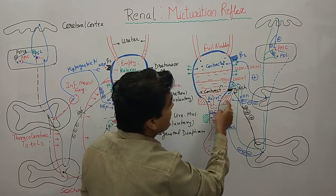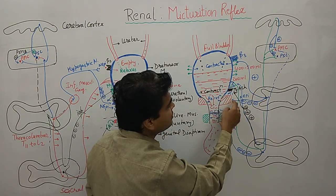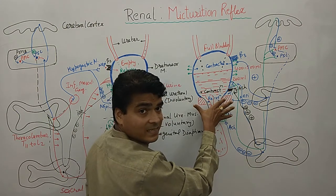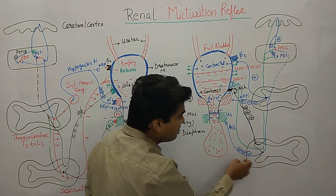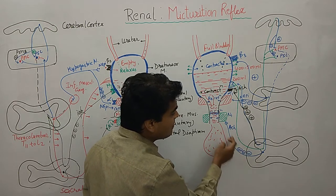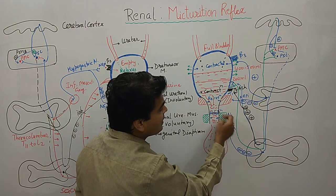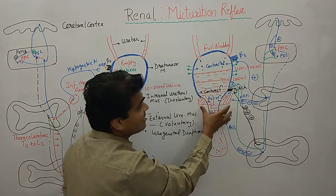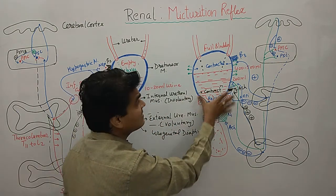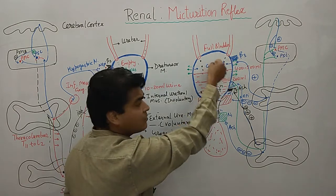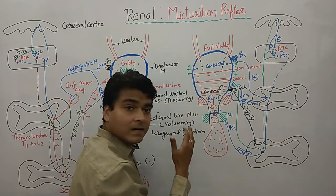The pontine micturition center activates beta-3 receptors causing contraction of detrusor muscles, inhibits alpha-1 receptors causing relaxation, and the parasympathetic nervous system is inhibited, reducing acetylcholine secretion. Nicotinic receptors relax external urethral muscles. M3 receptors also contract the detrusor muscle. By this mechanism, urine is passed from the urinary bladder.